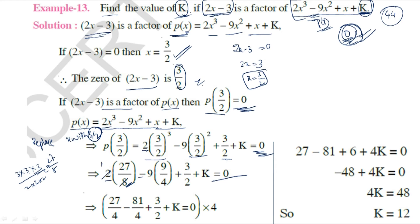Continuing the calculation: 27/4 - 81/4 + 3/2 + K = 0.